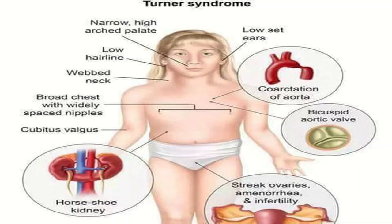In contrast, if we talk about secondary amenorrhea, the most common cause of secondary amenorrhea is polycystic ovarian disease. That was just for your general information.